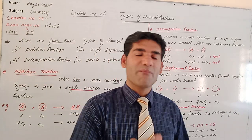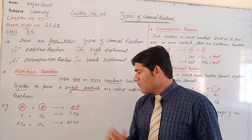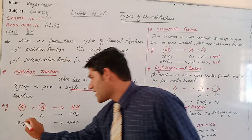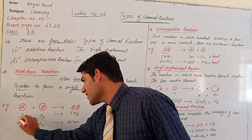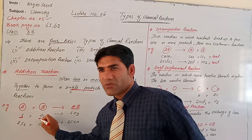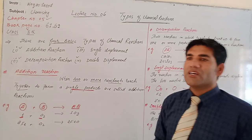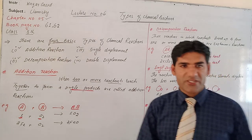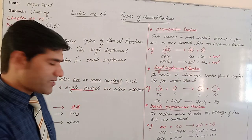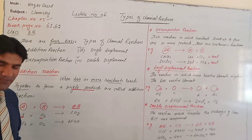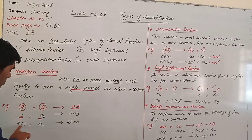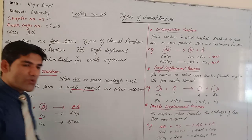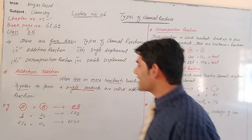Those reactions in which 2 or more reactants sum up together to form a single product. For example, sulfur reacts with oxygen to form sulfur dioxide — sulfur is one reactant, oxygen is another reactant, and sulfur dioxide is the single product formed after the complete chemical reaction. Also, iron reacts with oxygen forming iron oxide: 2 atoms of iron react with 1 atom of oxygen to give 2 FeO, a single product.